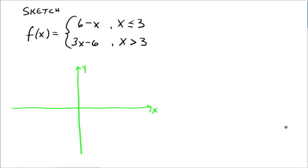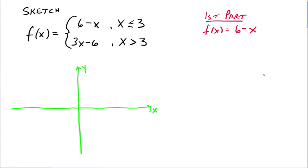Let's try another one. Sketch f of x equals 6 minus x when x is less than or equal to 3, and 3x minus 6 when x is greater than 3. Again, I'm going to do the first part and second part separately. The first part is f of x equals 6 minus x. The x value where things change is 3 — things change when our x values get to 3.